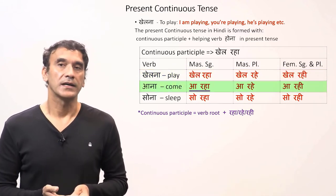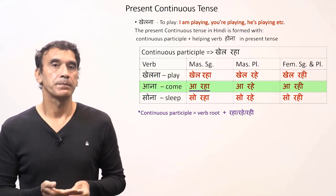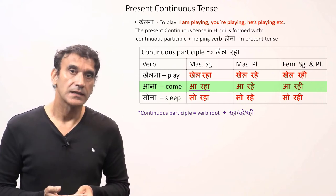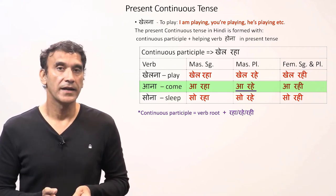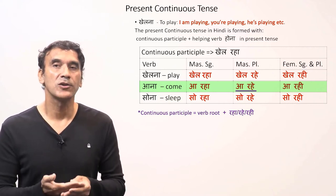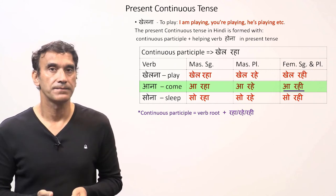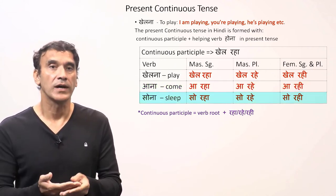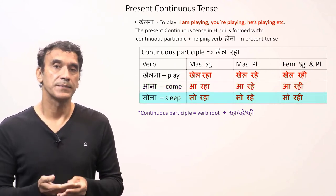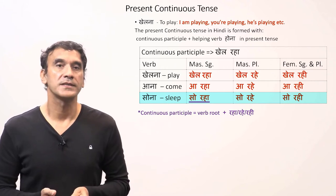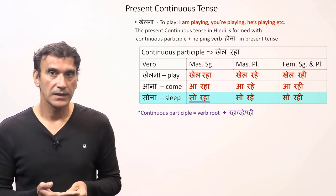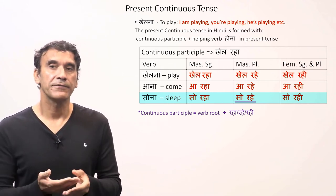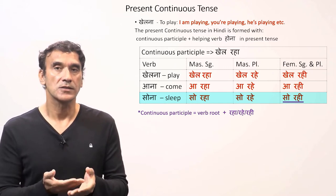Let's take another verb, 'aana' (to come). The masculine singular form is 'aa raha', the masculine plural form is 'aa rahe', and the feminine singular and plural form is 'aa rahi'. Let's take one more verb, 'sona' (to sleep). The masculine singular form is 'so raha', the masculine plural form is 'so rahe'.